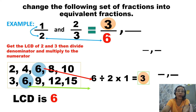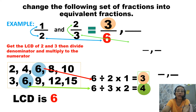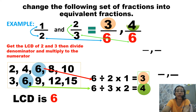Next, for 2 thirds: 6 divided by 3 equals 2. Then, 2 times 2 equals 4. So you have the answer: 4. This is now your equivalent fraction. For 1 half, the equivalent fraction is 3 sixths. For 2 thirds, the equivalent fraction is 4 sixths.